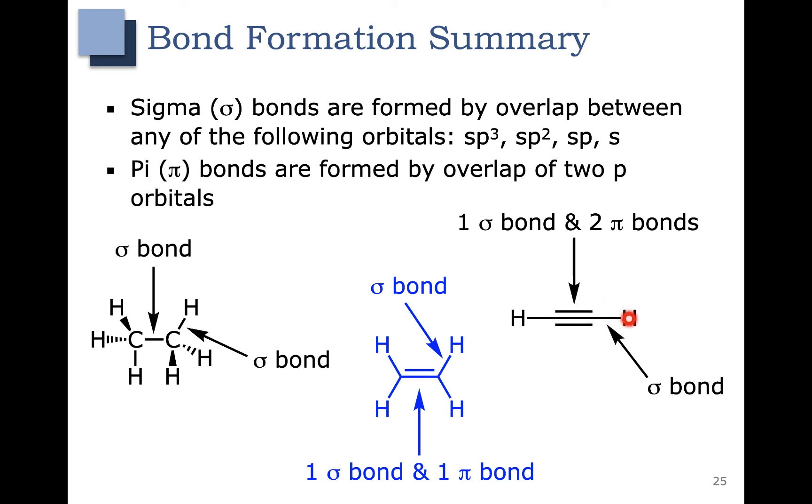The sigma bond here is formed by the overlap of an sp hybrid orbital with an s orbital from a hydrogen. In the next video, we'll look a little bit more at some of the trends that we see in hybridization.